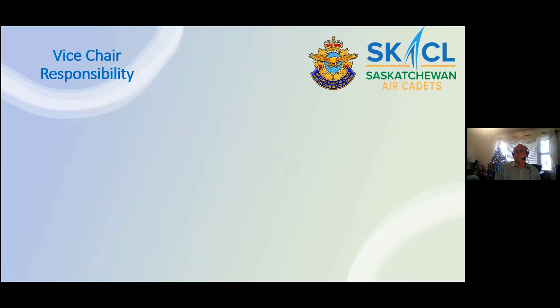We'll start with the vice chair position. Normally the vice chair will assist the chair as needed. If the chair can't make a meeting, the vice chair could run the meeting in the chair's place. If there are particular responsibilities the chair was unable to fulfill, the vice chair would have the authority to complete some of those.